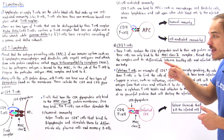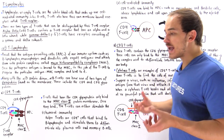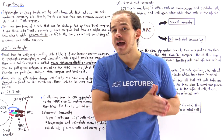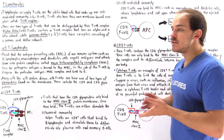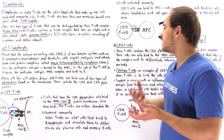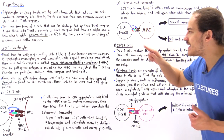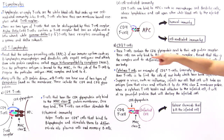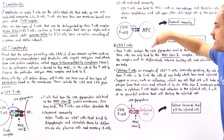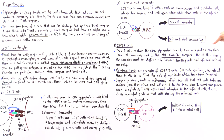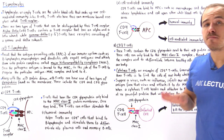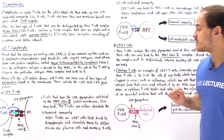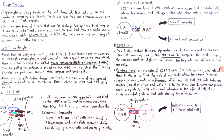The class I MHC is the protein complex used by our white blood cells to differentiate between healthy cells and infected cells of our bodies — specifically cells that have been infected by some type of viral or parasitic agent. CD8 T cells are those cells that help destroy the infected cells of our body. These cells can only bind to the MHC class I complex, which is the complex used to differentiate between healthy and infected cells.